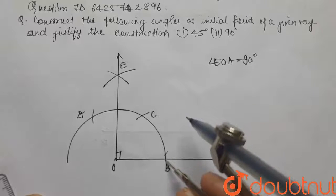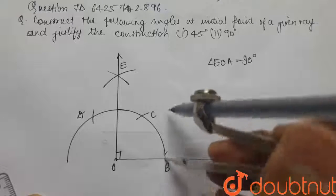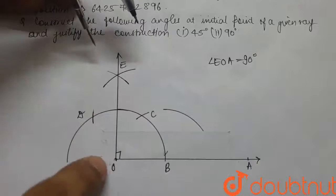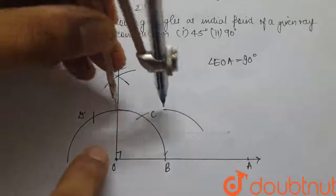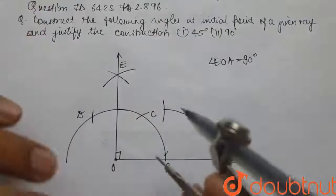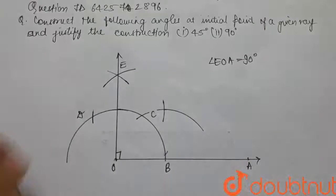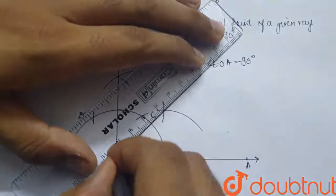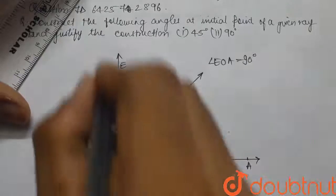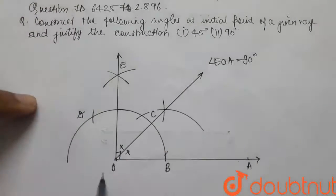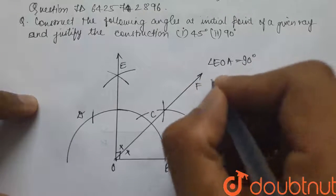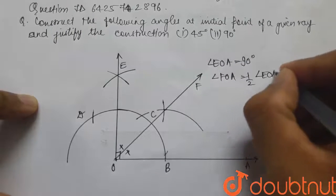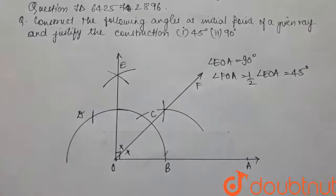Next we place our compass on B, make an arc, then place the compass on the point of intersection of side OE and the semicircular arc, and make one more arc. We see that both of these arcs intersect, so we join this point of intersection with point O to get our angle bisector of right angle EOA. Let's name this point F, so angle FOA is half of angle EOA, equal to 45 degrees.